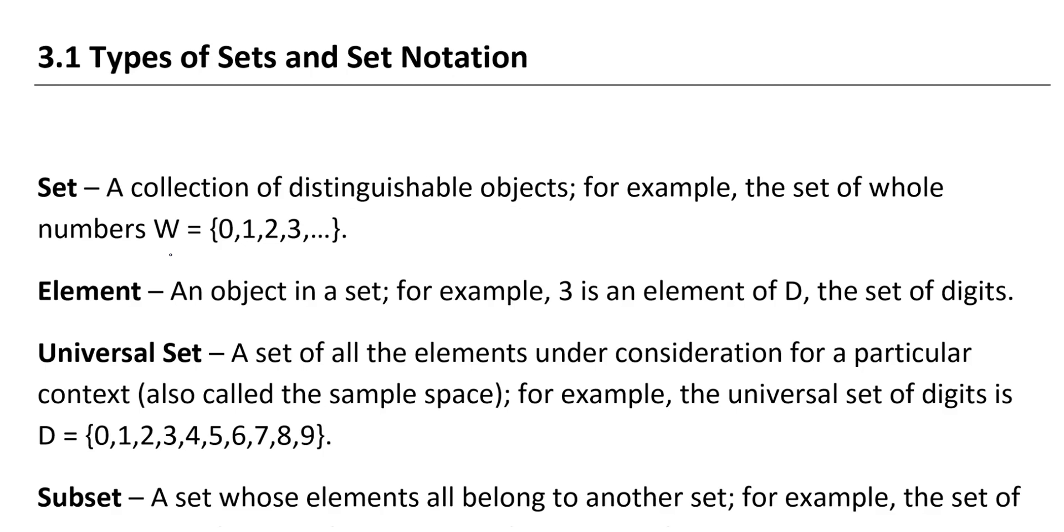The universal set is a set of all the elements under consideration for a particular context. So, for example, the universal set for a set of digits, 0, 1, 2, 3, 4, 5, and so on. We're going to continue to look at some of these definitions as we move along and look at our first example.